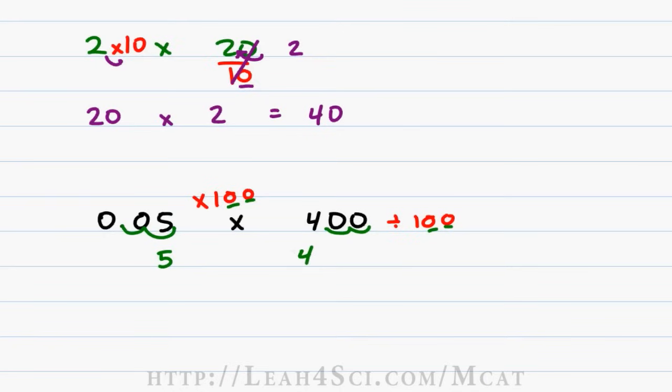Now I don't know about you but 0.05 times 400 is difficult, 5 times 4 is not. It's just 20.